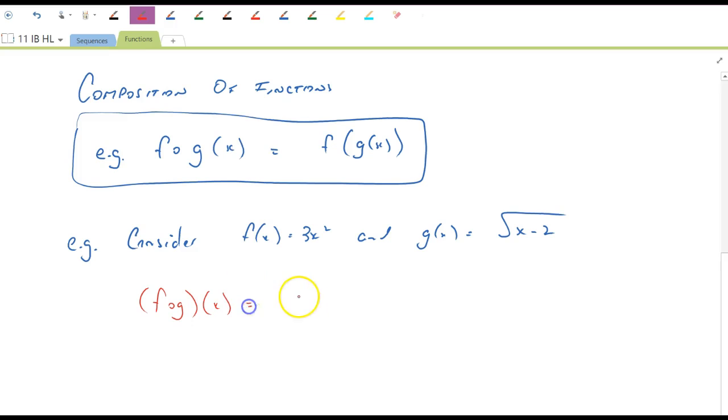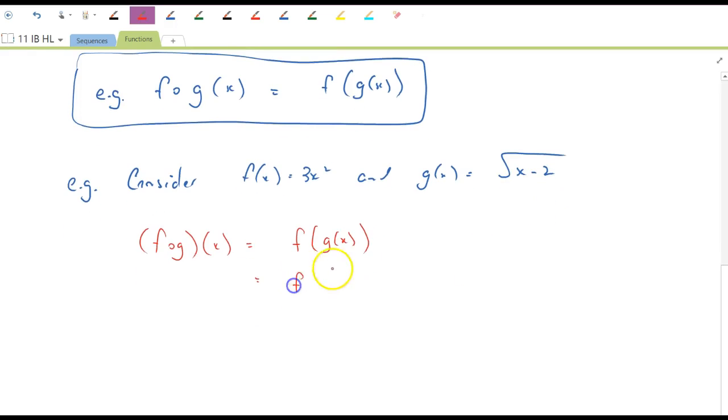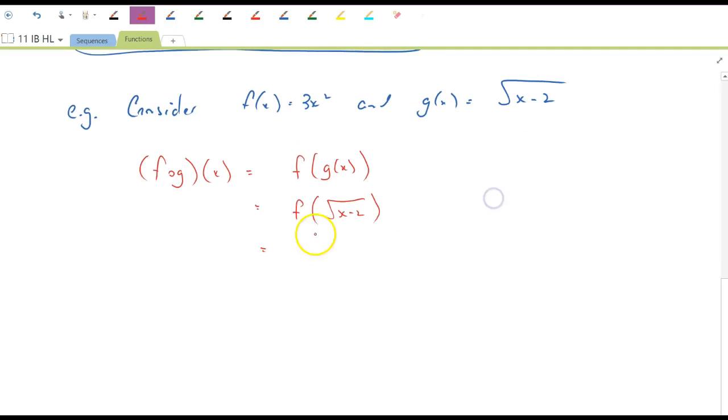f of g(x) will equal the f function applied to g(x), which is the square root of x minus 2. So we put the square root of x minus 2 into the f function, so we get 3 by the square root of x minus 2 squared, which is just 3 by x minus 2, which equals 3x minus 6. So that's the composite function.